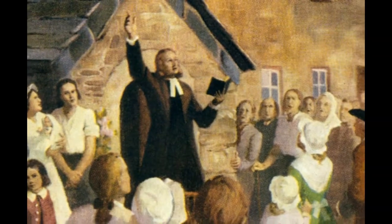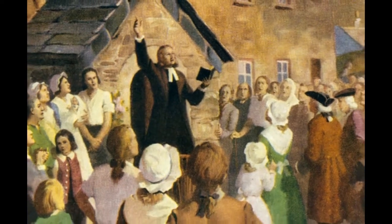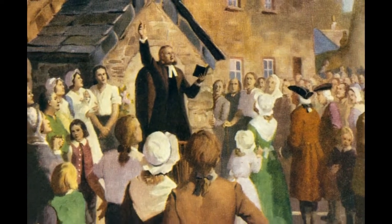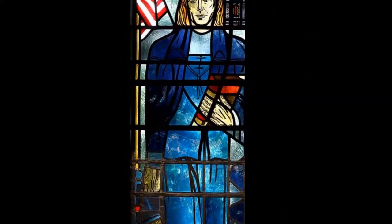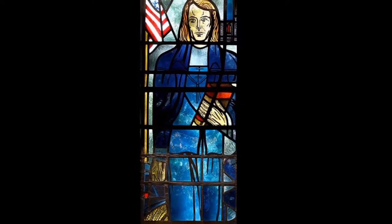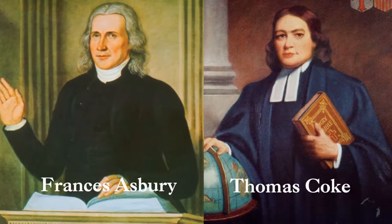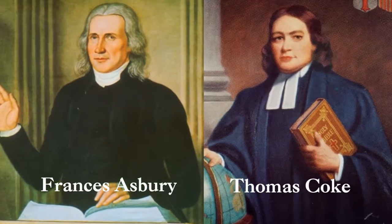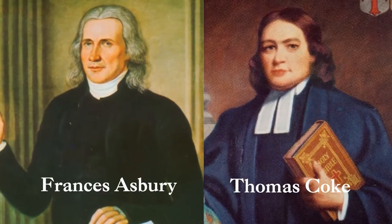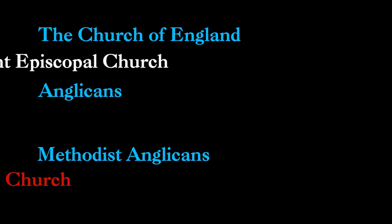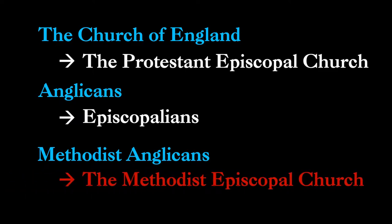John Wesley never intended Methodism to cause a separation from the Church of England. He believed he was leading a reform and revival movement within the Church. But after the American Revolution, Wesley recognized there had been a permanent rupture between American Methodists and the Church of England. In 1784, Wesley ordained ministers and appointed leaders in the former colonies, allowing the American Methodist Church to become independent. American Anglicans had begun to call themselves Episcopalians, so the new church was called the Methodist Episcopal Church.